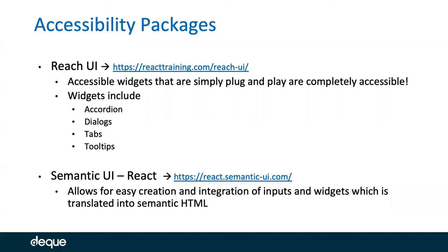The other one that's caught a lot of people's attention is Semantic UI for React. Semantic UI allows for easy creation and integration of inputs and widgets, which you can translate into semantic HTML. It allows you to kind of have custom tags and then use Semantic UI to add attributes on your tags to make them into semantic HTML. It does have some good guidance on how to use semantics out of the box. Especially if you're looking at this presentation today and thinking: I don't want to do divs for buttons or spans for inputs — Semantic UI would be something you can use.